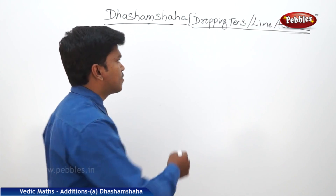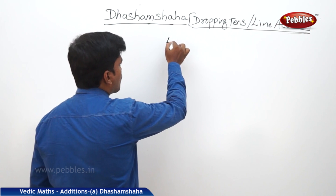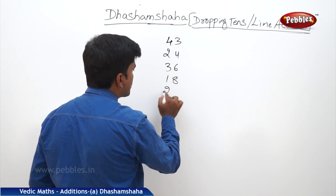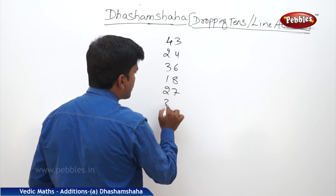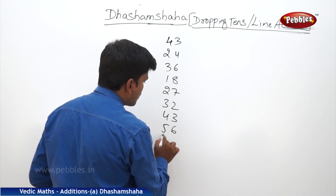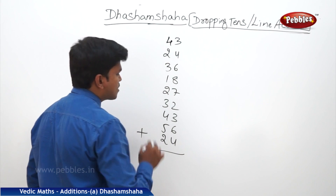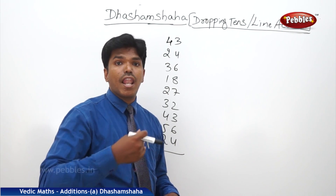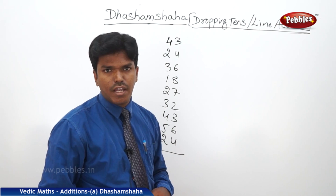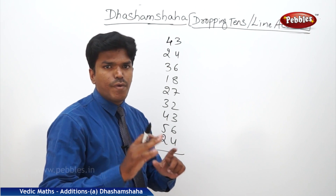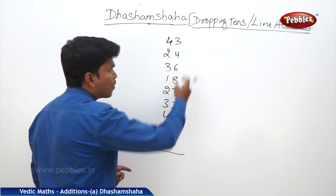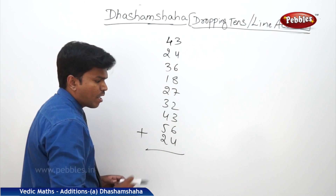Example: 43, 24, 36, 18, 27, 32, 43, 56, 24. I want to add these numbers using line addition — that is, Dashamsaha. We will start from the right side — this right line. Now let us start.